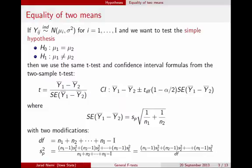So testing two means in this context looks essentially like the two-sample T-test, but the degrees of freedom and the calculation of the pooled variance change.